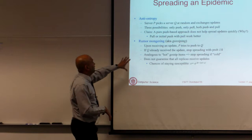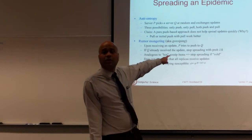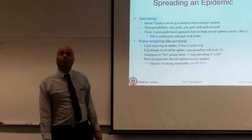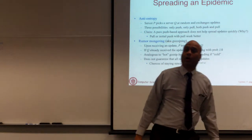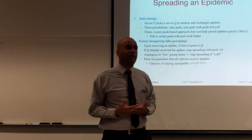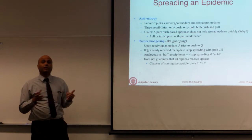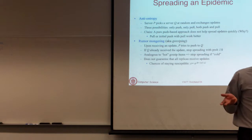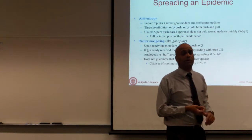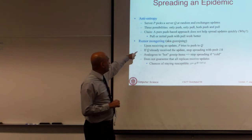So that is essentially anti-entropy. The other technique is called rumor mongering, also called gossiping. When you hear about gossip protocols in distributed systems, they are talking about this class of epidemic protocol. The way to think about it is how rumors spread — you have some hot gossip item, you call all your friends, post it on Facebook, and spread it. You do this until you figure out that everyone knows about it, and then you stop. That rationale is what rumor mongering is based on.